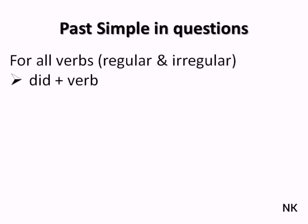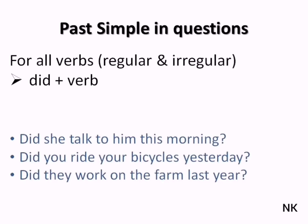Past simple in questions. For all verbs, regular and irregular, we use the auxiliary verb 'to do'. But we need the past simple tense, which is 'did' plus the infinitive form of the verb. For example: Did you talk to him this morning? Did you ride your bicycle yesterday? Did he work on the farm last year?